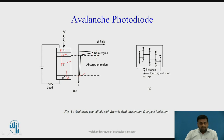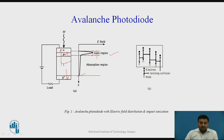This multiplication of carrier generation is known as the gain process. The high electric field region is named the gain region, while the intrinsic region is named the absorption region. Due to the application of the high reverse field, the depletion region at this junction widens, and hence this avalanche photodiode is also referred to as a reach-through avalanche photodiode.